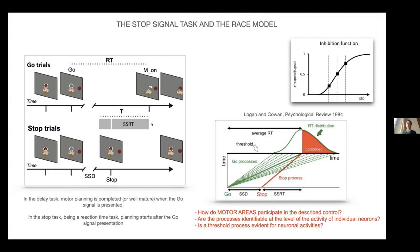The model was applied quite successfully to explain behavioral data and sometime in particular for eye movements, also for neural data, but was less efficient for other kinds of movements like the arm or key press. Many questions are relatively still open, among these: how do motor areas participate in the described control? Are these processes identifiable at the level of the activity of individual neurons?